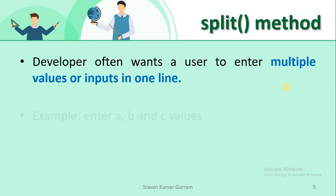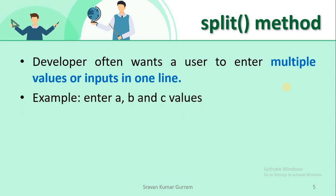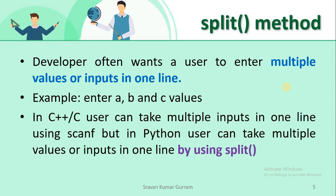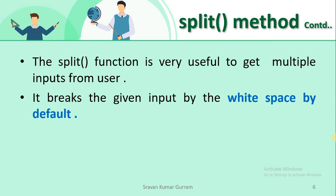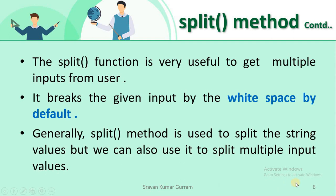For that we use the split function. My prompt message is 'Enter a, b and c values' because I want to receive three values at a time. Just like in C or C++ we use scanf to receive multiple inputs with a single statement, in the same way we can use the input statement with the split function to take multiple values. When we use split, it breaks the given input by whitespace by default — where you give a space, the split function uses that space as a separator. Generally split is used to split string values, but we can also use it to receive multiple values with the input statement.